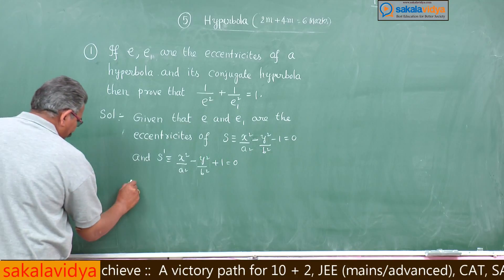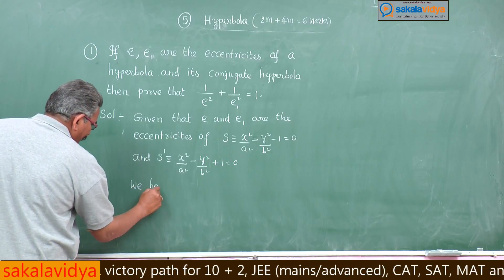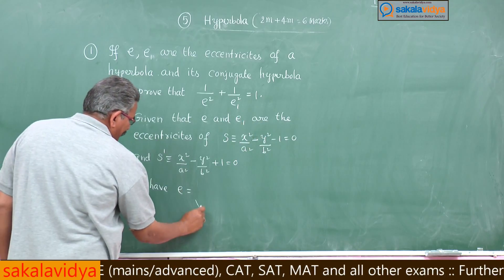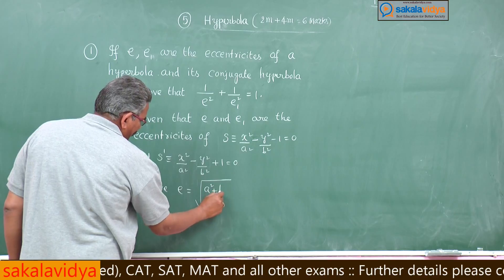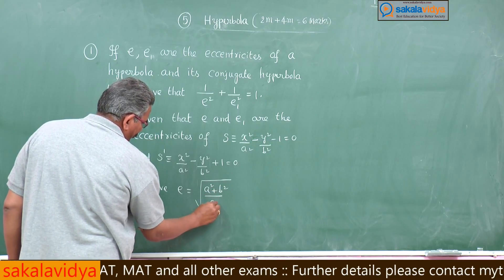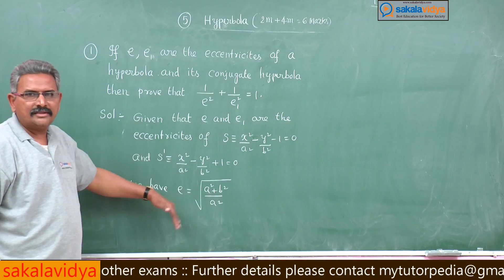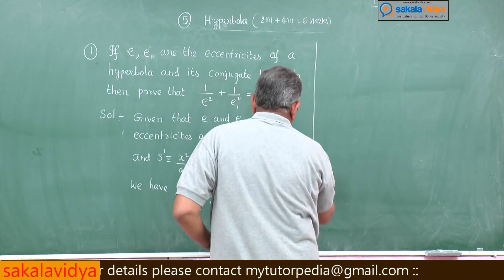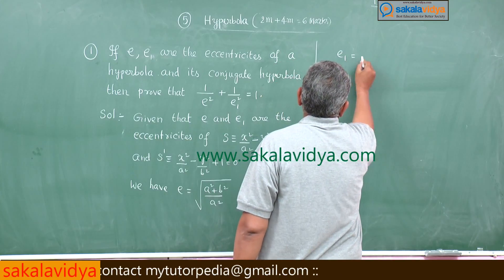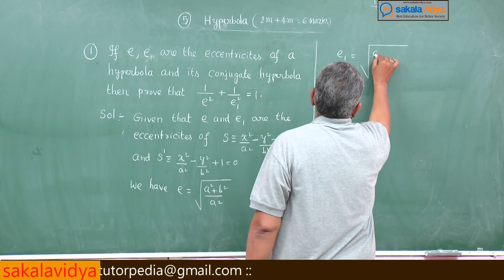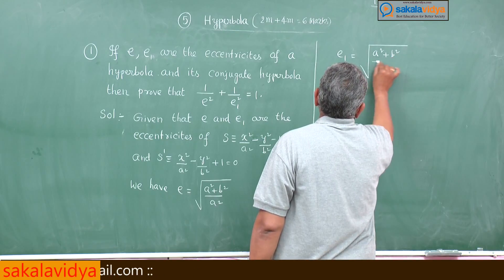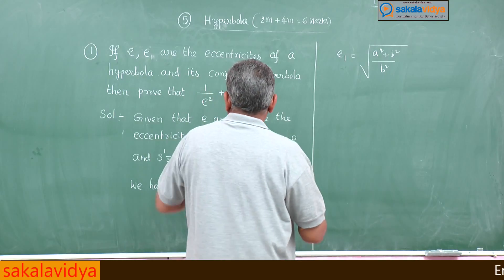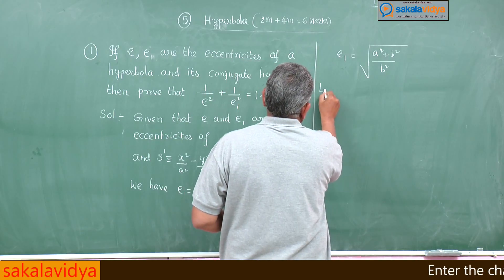We have the eccentricity of the first hyperbola: E = √((a² + b²)/a²). Since the second one is the conjugate of the first, E₁ = √((a² + b²)/b²) — instead of a² in the denominator, we write b². Now, what do we have to find? We take the left-hand side.